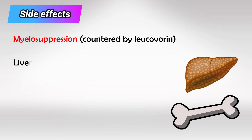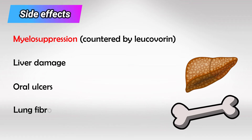Other side effects include hepatotoxicity, mouth ulcers, and pulmonary fibrosis. The cells making the mucosal membranes, like the lining of the inner side of the mouth, are constantly reproducing, and because methotrexate inhibits DNA synthesis, it inhibits the production of new cells — and that's why we have mouth ulcers.